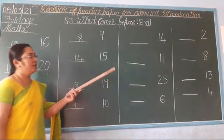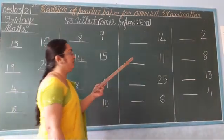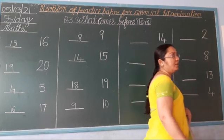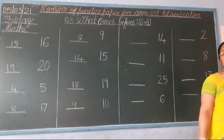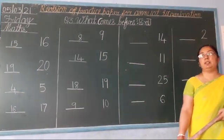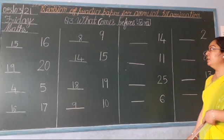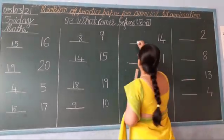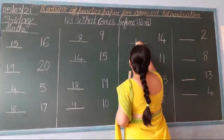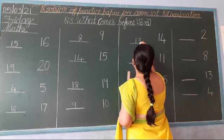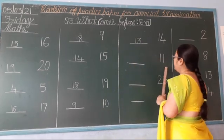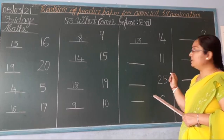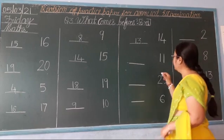Next, which number is this? 1, 4 — 14. So: 11, 12, 13, 14. Which number comes before? 1, 3 — 13. Clear? Next: 11. Which number comes before? 1, 0 — 10.